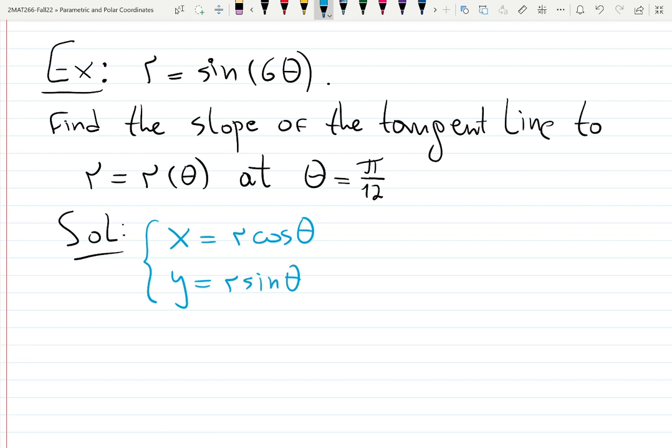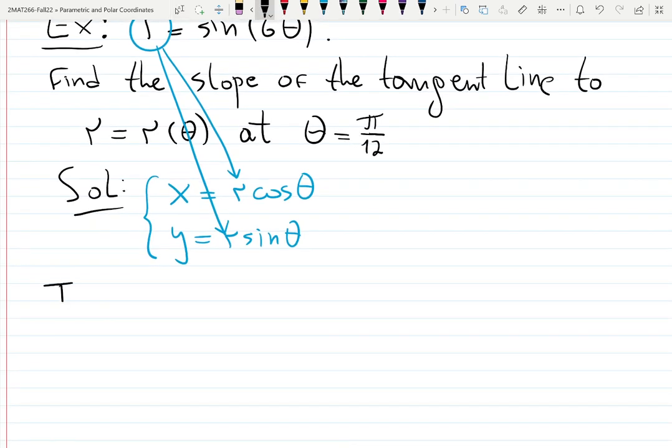So, in this case, r is given as sine 6 theta. So we're going to plug it in. r is given as a function. Thus, x equals sine 6 theta times cosine theta, and y equals sine 6 theta multiplied by corresponding tails. For x, it is cosine theta. For y, it is sine theta.